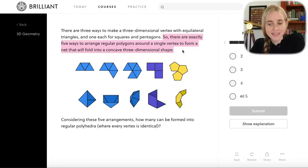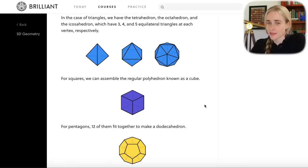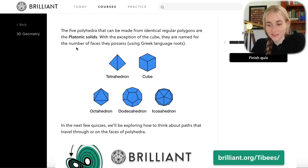So there are exactly five ways to arrange regular polygons around a single vertex to form a net that will fold into a three dimensional shape. And for all five of these cases for the vertices, they can be extended to make the full shape where every vertex is identical. That gives us the five platonic solids, the tetrahedron, the cube, the octahedron, the dodecahedron, and the isosahedron.